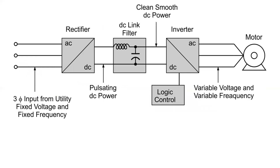Looking at a more detailed diagram, we can see fixed voltage and fixed frequency three-phase from the utility entering a rectifier. The rectifier won't produce perfect DC — it's more of a pulsating DC. A filter consisting of an inductor and a capacitor smooths the DC into a clean smooth DC voltage, which is then sent through an inverter that converts the DC to AC voltage going to the motor at variable voltage and variable frequency.